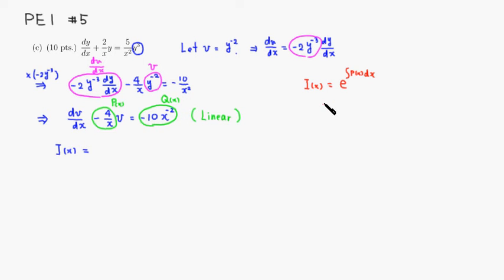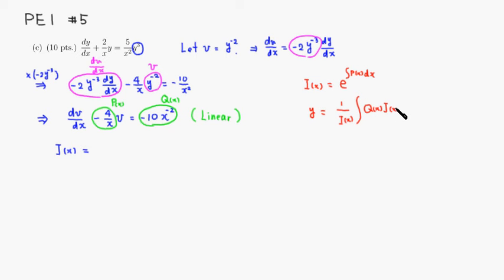The solution formula is v equals 1 over I times the integral of Q(x) times I(x) dx. The integrating factor I is e to the integral of negative 4 over x dx.